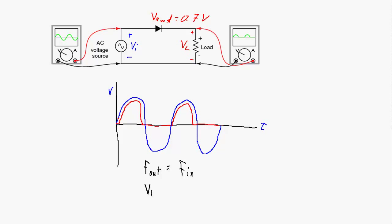The average or DC voltage of the output signal is equal to the peak value of the output signal over π. The RMS value of the output signal is equal to the peak value of the output signal over 2.